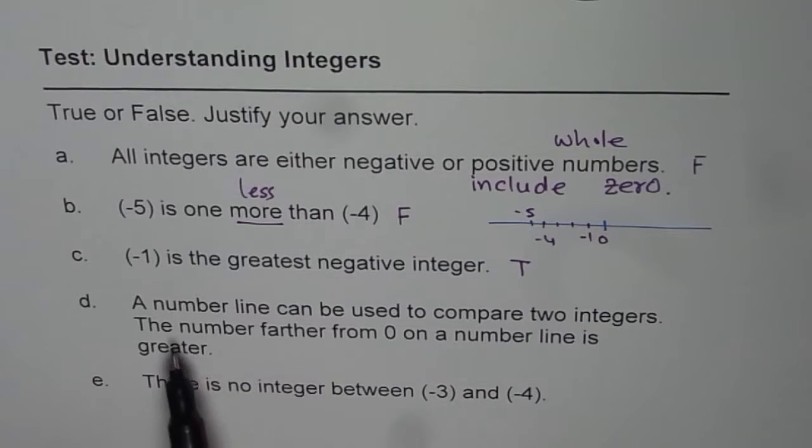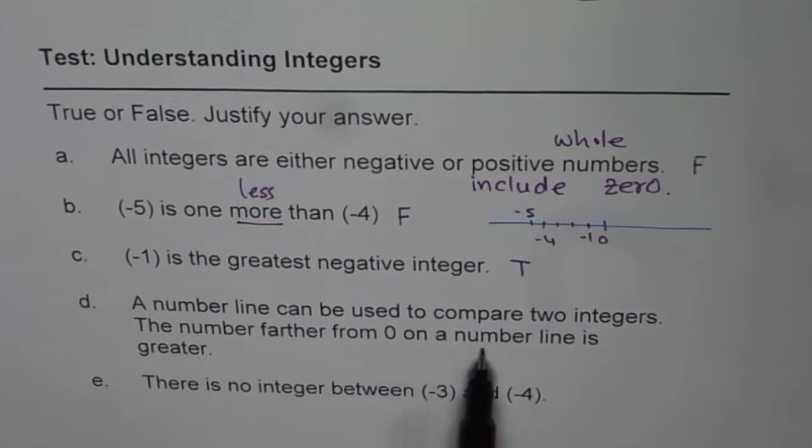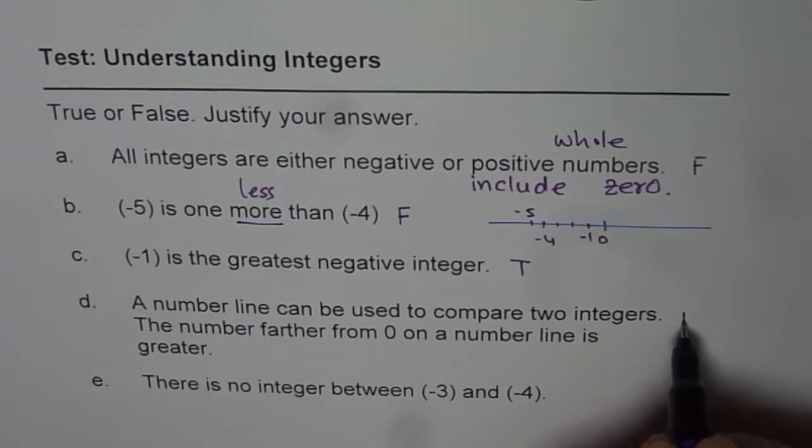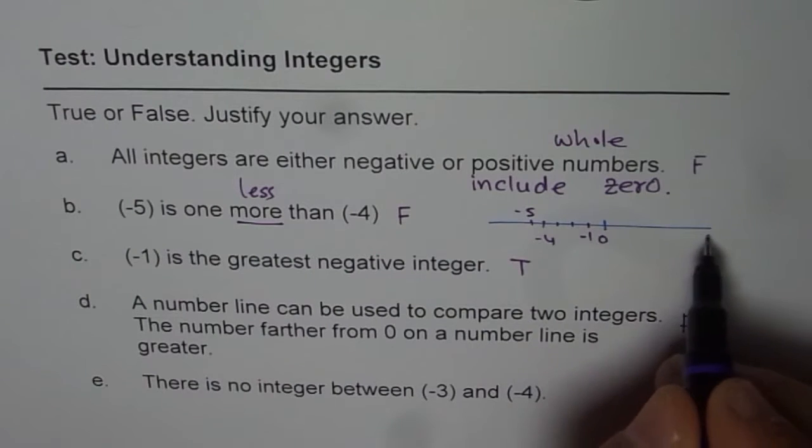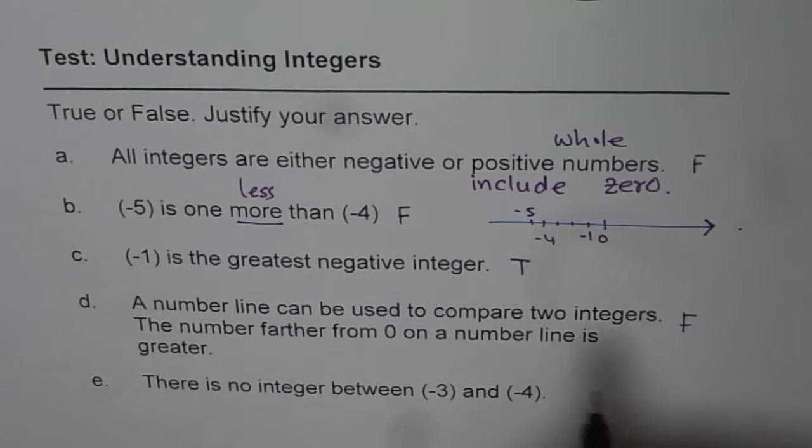Question D: A number line can be used to compare two integers, just as we did in the previous question. The number farther from 0 on a number line is greater. That statement is false. As you have seen, if you are going farther to the right, then it is true.